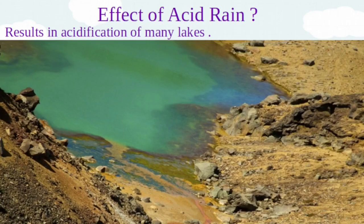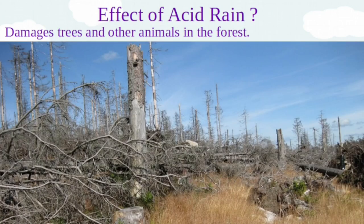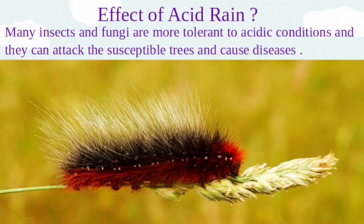Acid rain damages trees and other animals in the forest. It damages foliage and weakens trees, making them more susceptible to stress like cold temperatures and drought. Many insects and fungi are more tolerant to acidic conditions and hence they can attack these susceptible trees and cause disease.